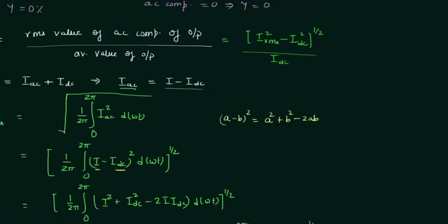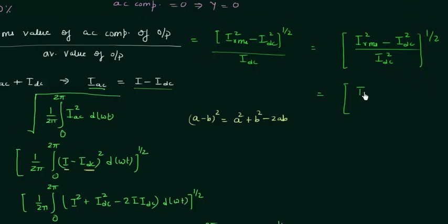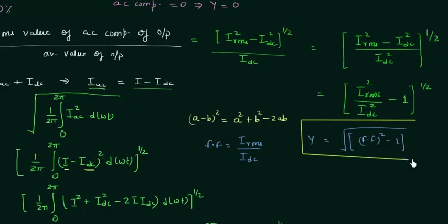We can rewrite the ripple factor as the square root of (IRMS² minus IDC²) divided by IDC², which simplifies to the square root of (IRMS²/IDC² − 1). Since the form factor equals IRMS divided by IDC, IRMS²/IDC² is the square of the form factor. Therefore, gamma equals the square root of (form factor² − 1). This is the generalized formula for the ripple factor.